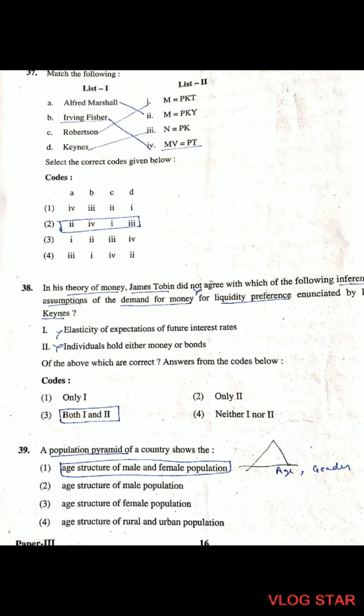Question 37: Match the following. Alfred Marshall gave M = PKY. Irving Fisher gave the quantity theory equation.